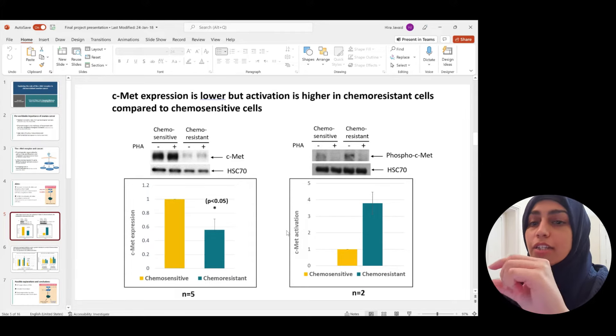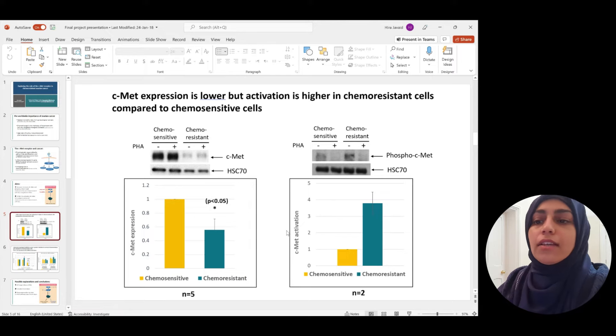The title of the slide should be your result in a nutshell. It shouldn't be something vague like CMED expression in chemo-resistant cells. Give them an actual result. So I clearly said CMED expression is lower, but activation is higher in chemo-resistant cells compared to chemo-sensitive cells. And then again, there was no other detail. And everything else I explained. That's what your presentation is for. You don't have to write all that text onto your slides. Also, if you notice, the pictures are quite big. There are literally just two panels on a slide. I've tried not to make it that full.